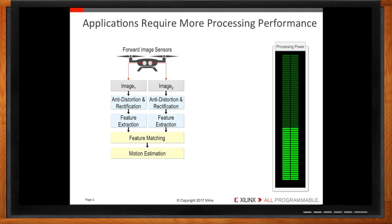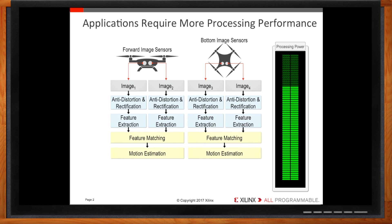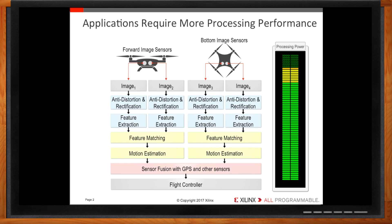For some applications, stereo vision from two cameras is sufficient. But for our drone, two additional bottom-facing cameras are needed, effectively doubling processing requirements. Data from all four inputs must be fused together to form a single data point for the drone's flight controller, allowing the controller to determine the best trajectory. The more sensors, the more processing performance we need — and all this processing must happen in real time. Even a simple two-camera system requires a lot of processing performance to provide a timely response.